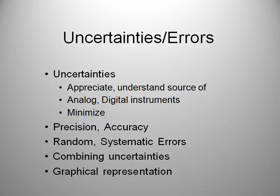Hi there and welcome to the screencast on uncertainties and errors in measurement. This is a screencast in a series on IB Physics, topic one about physics and physical measurement. In this screencast we're talking about uncertainties, how to appreciate and understand them and where they come from, what the uncertainties are when measuring on analog and digital instruments, how to minimize uncertainties, precision and accuracy, random and systematic errors, how to combine uncertainties, and how to represent uncertainties graphically. Let's get started.